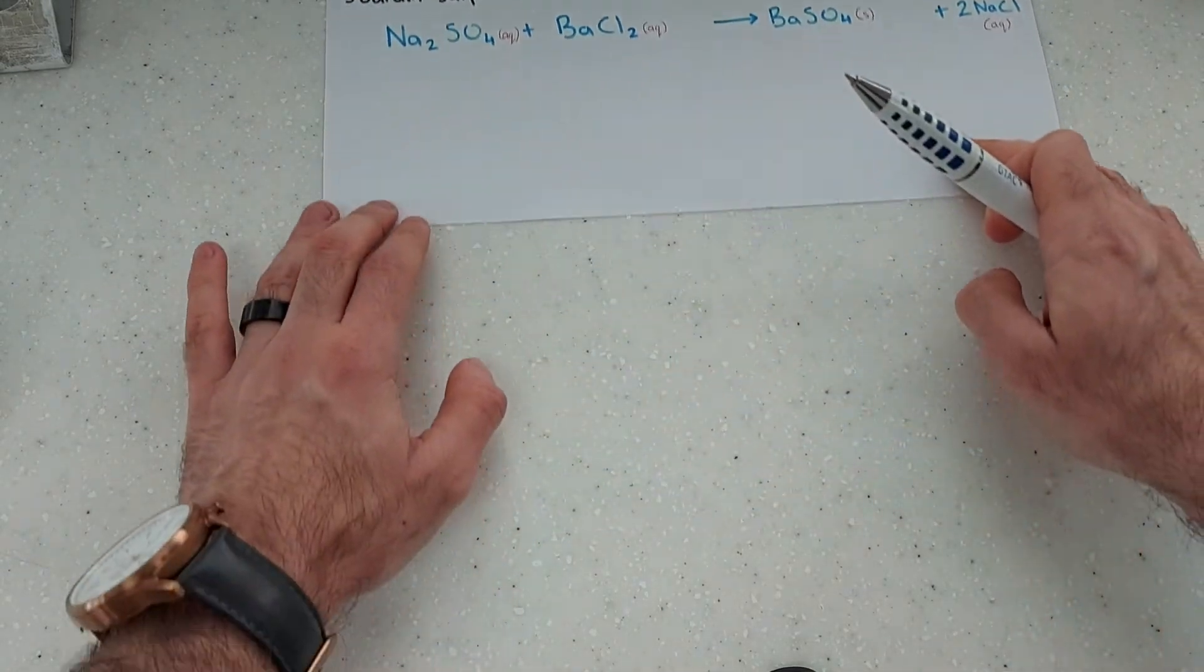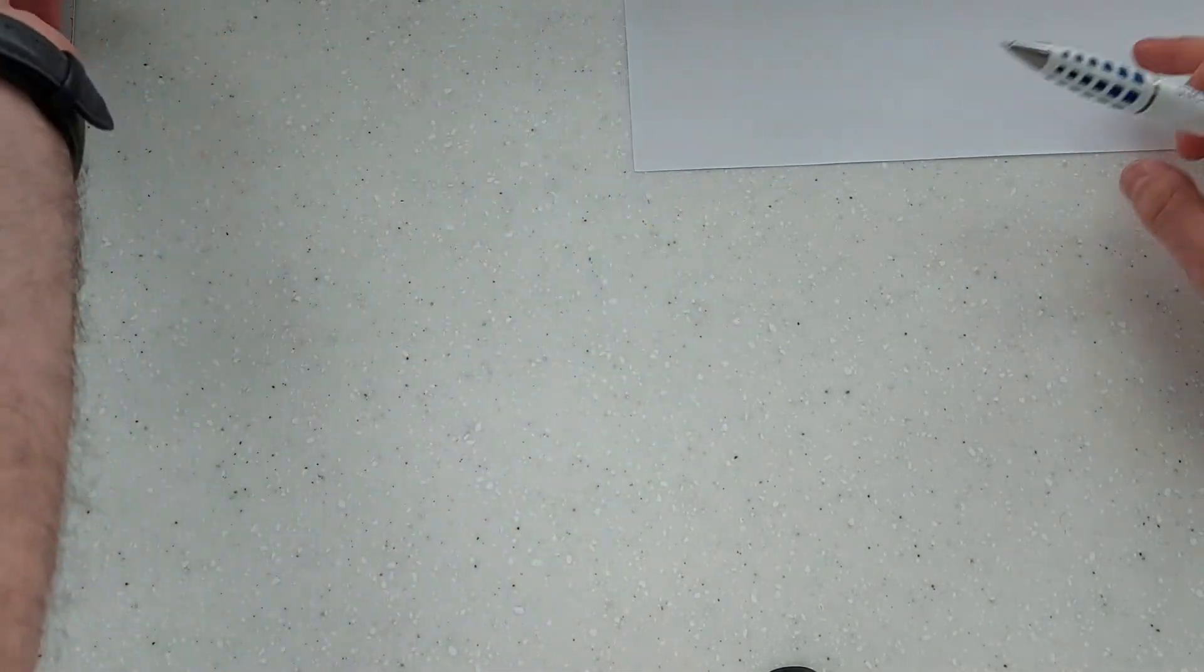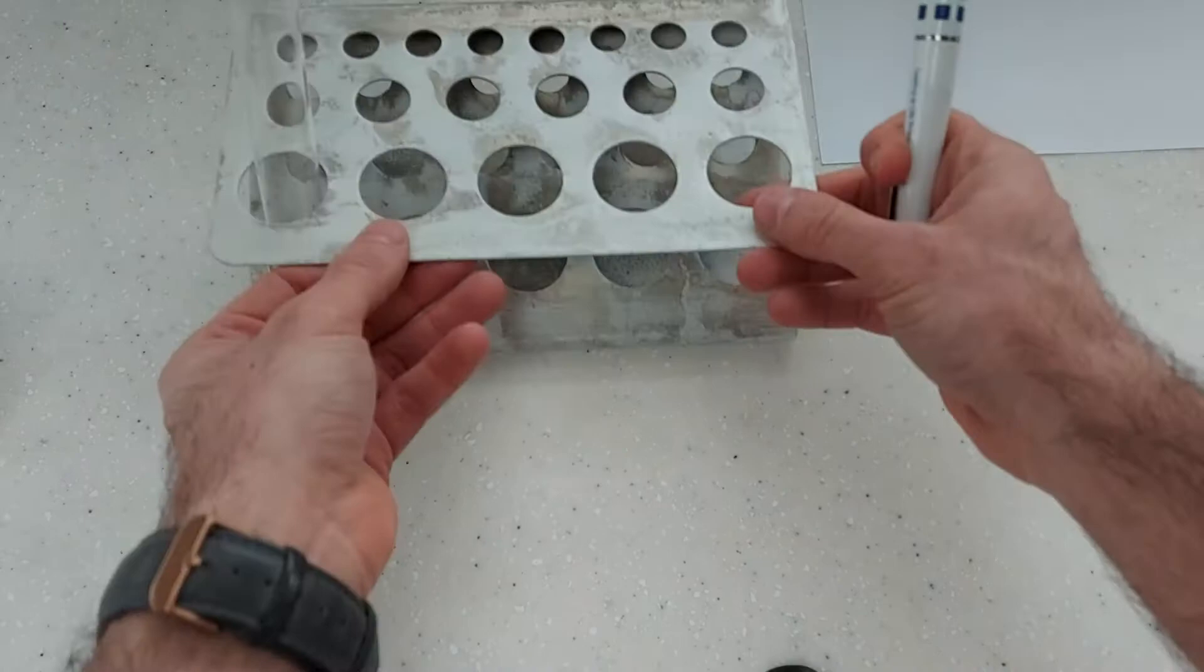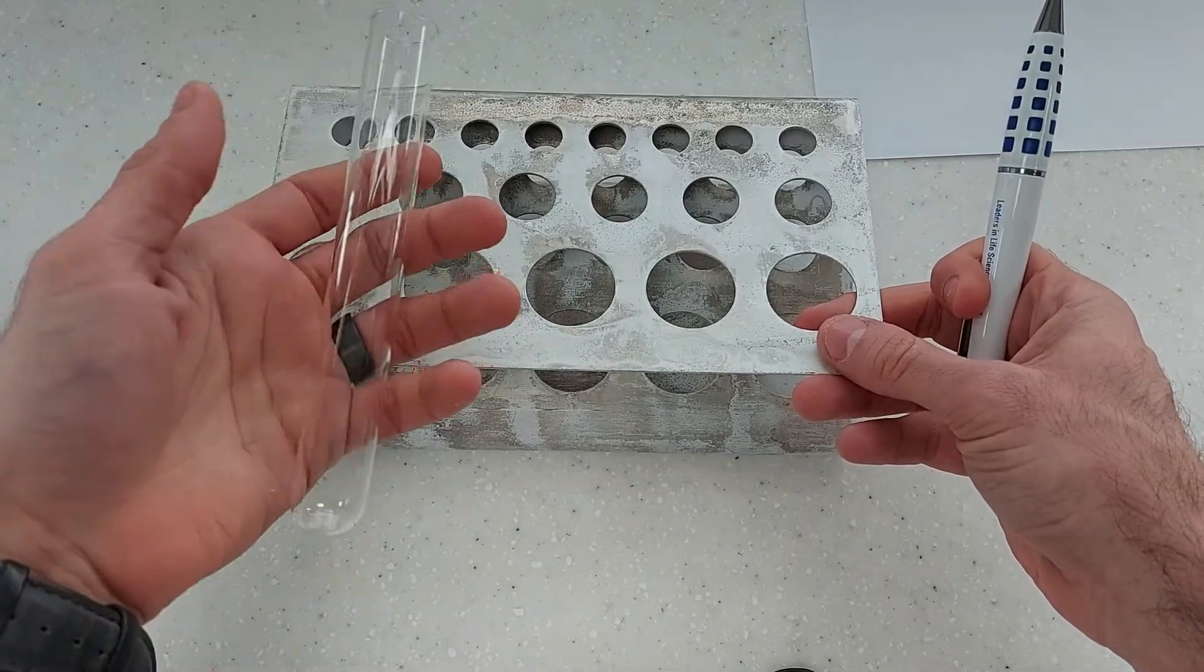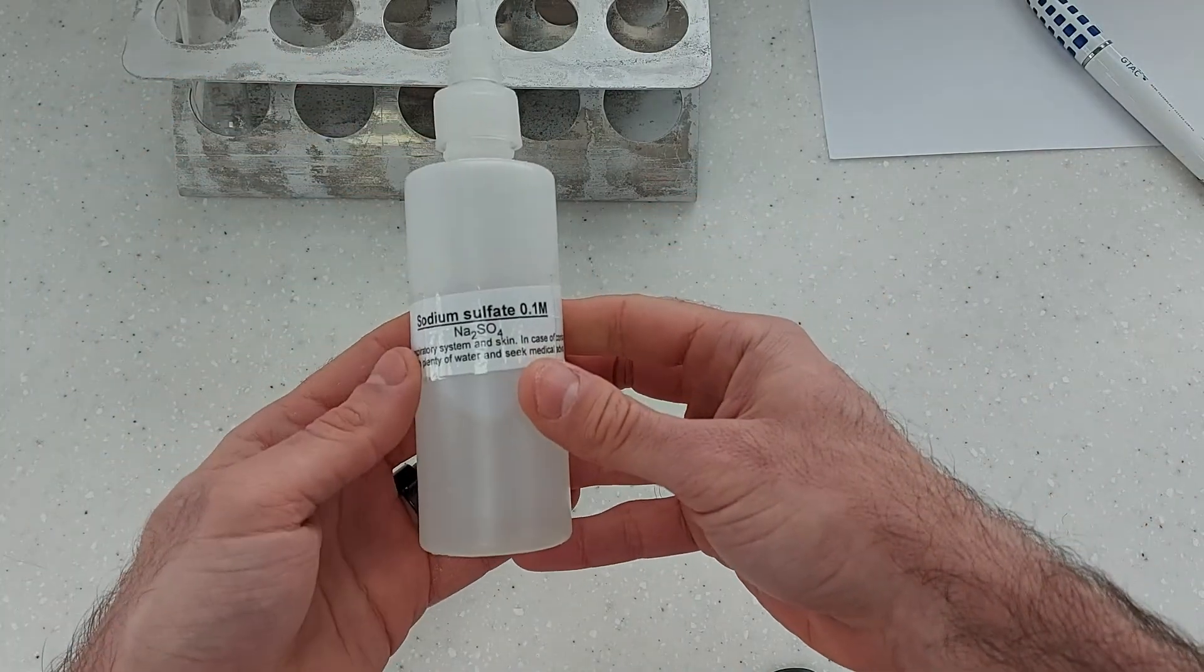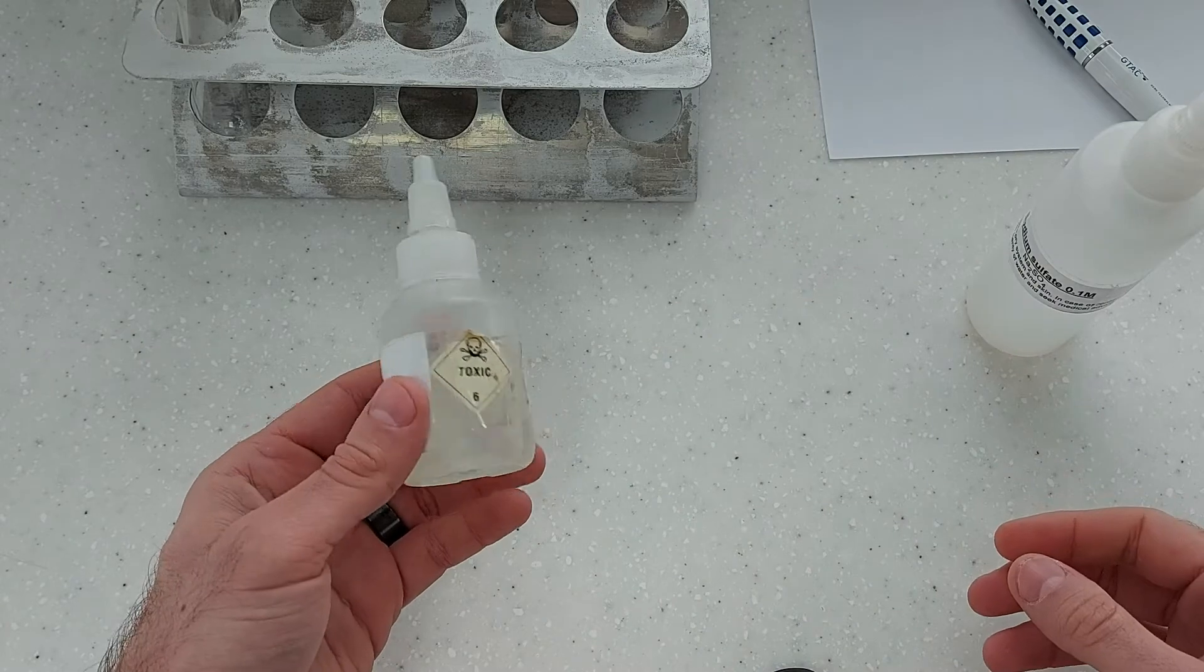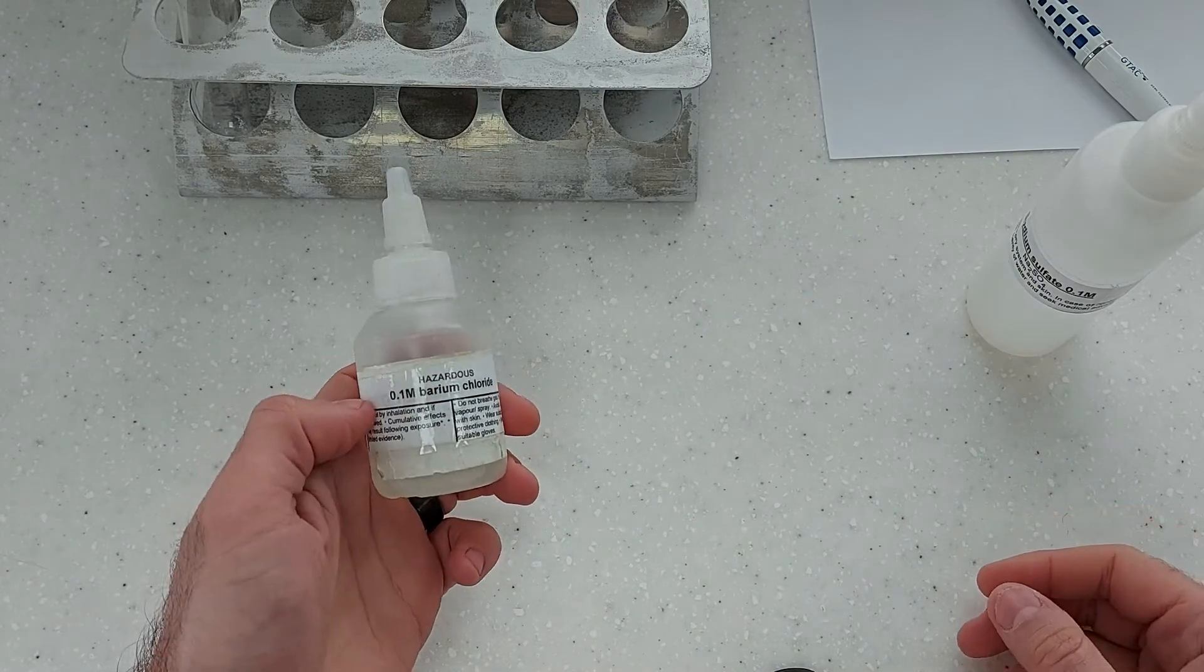Okay let's put this just there for the moment and then I'll bring in my materials. So here I've got a test tube rack and a test tube. I've also got my sodium sulfate and I've got my barium chloride here.